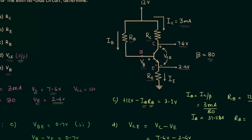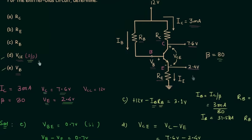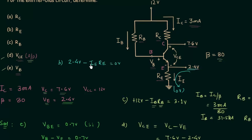Next we calculate resistance RE by applying KVL in the emitter loop, starting from 2.4 volts down to ground (0V): 2.4V minus IE·RE = 0. Since IE ≈ IC = 3mA, we get RE = 2.4V / 3mA = 0.8 kilohms.